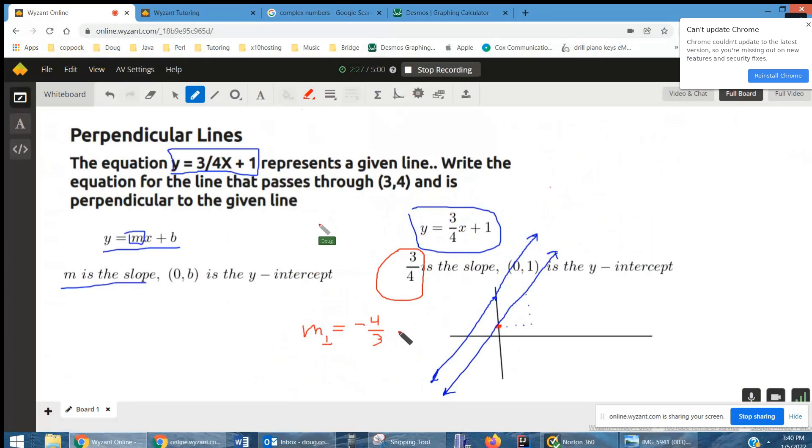Any line with the slope of negative four-thirds will be perpendicular to these blue lines. Of course, there's infinitely many equations like that. But we want the one that passes through 3, 4.